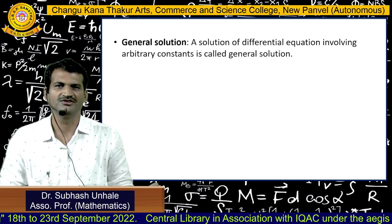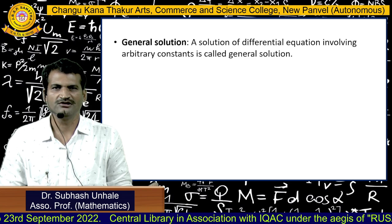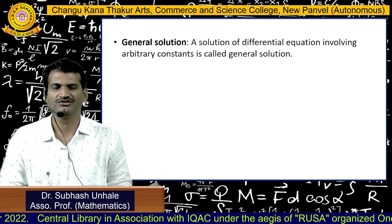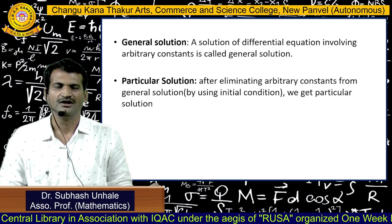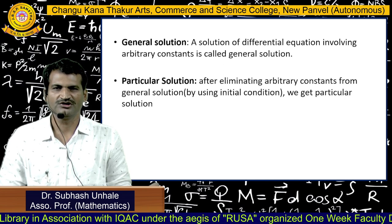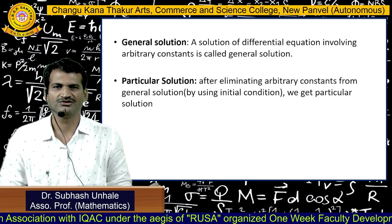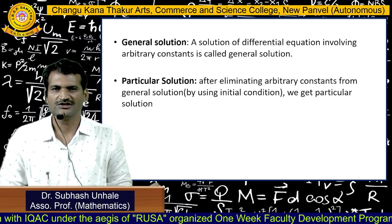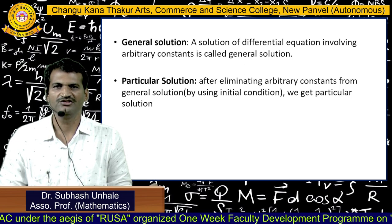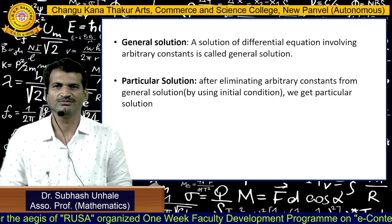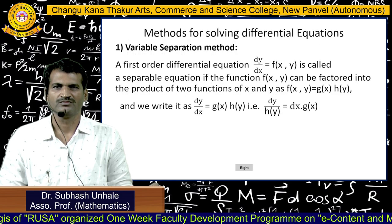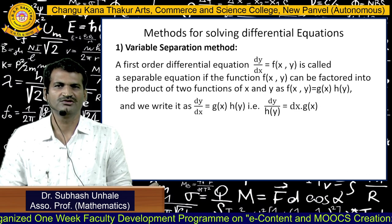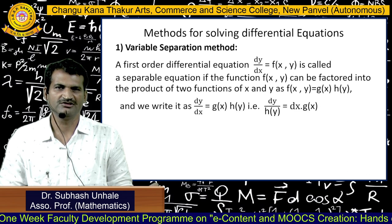There are two types of solutions for differential equations. The general solution involves arbitrary constants. The particular solution is obtained by eliminating arbitrary constants from the general solution using initial conditions. There are also different methods for solving differential equations.